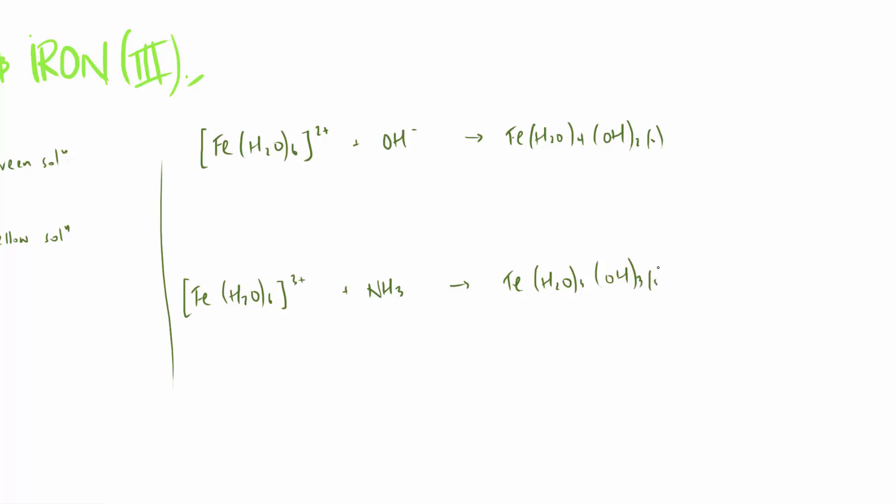Solid in both cases, precipitates formed, and we end up with water in this one, and in this one because it's ammonia we end up with the ammonium ion. Balance that up correctly. Note that you obviously have slightly different balancing going on, the 2 versus the 3 there.